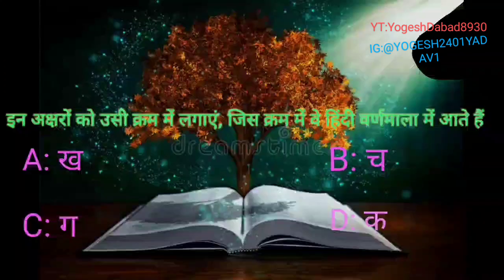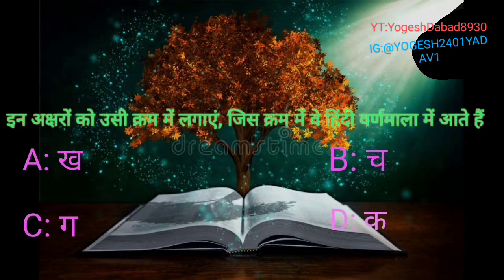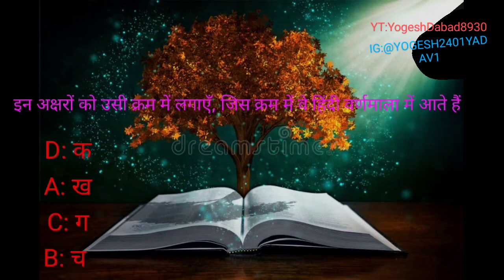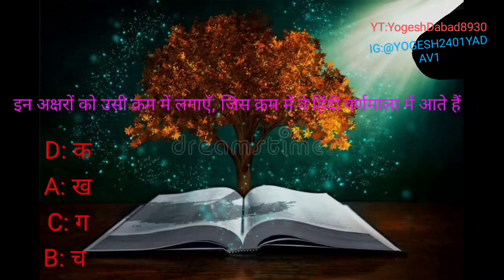Sahi uttar kya hona chahiye, sahi kram dekhte hain. Sabse pahle aata hai D - ka, phir aata hai A - kh, phir aata hai C - ga, aur ant mein B - cha. Ka, kh, ga, cha.